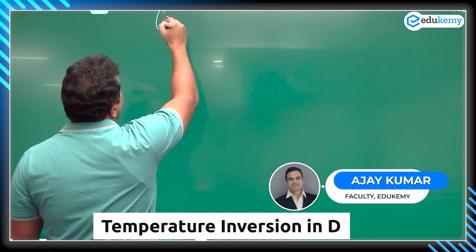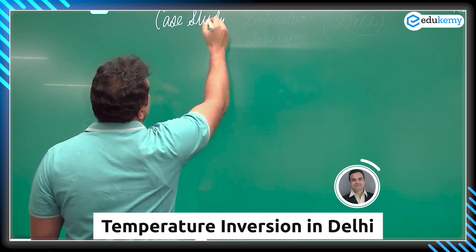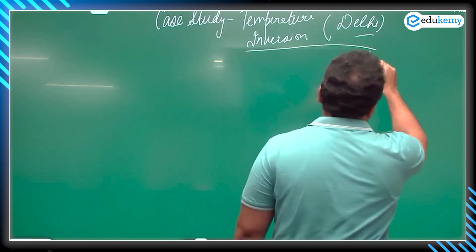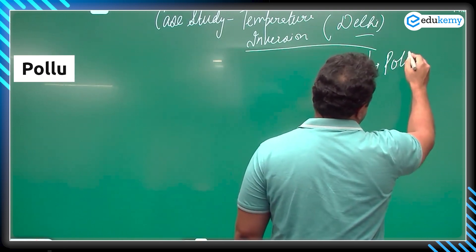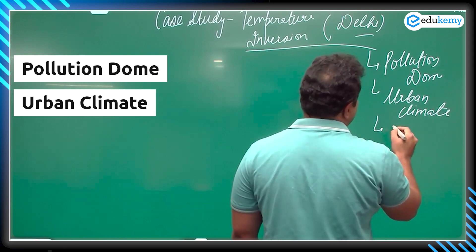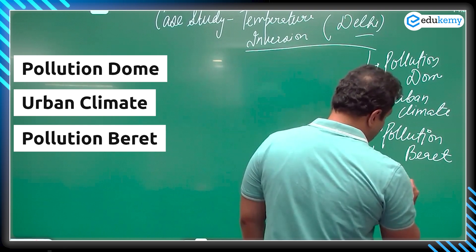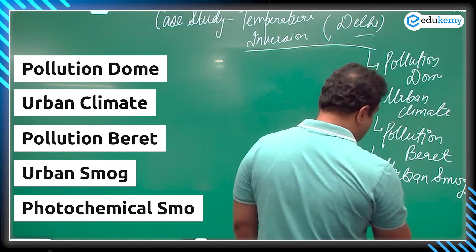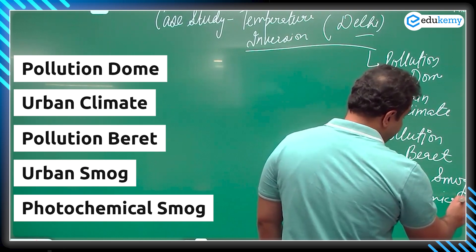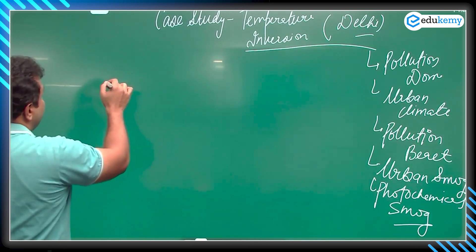Today's case study is about temperature inversion in Delhi. This particular case study can be used in multiple themes like pollution dome, urban climate, pollution, and urban smog or photochemical smog. Questions have already been asked in previous years related to these themes. Drawing a rough map of Delhi.